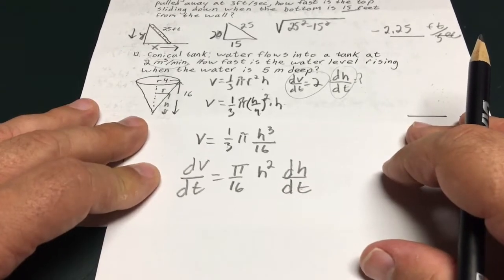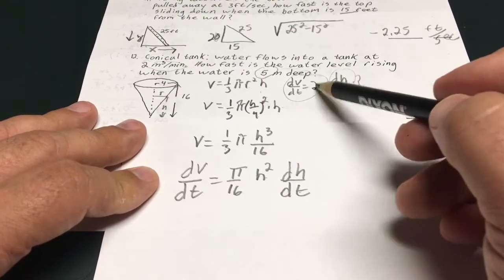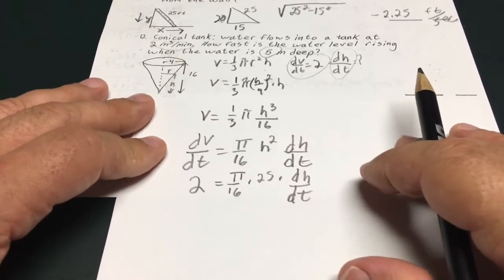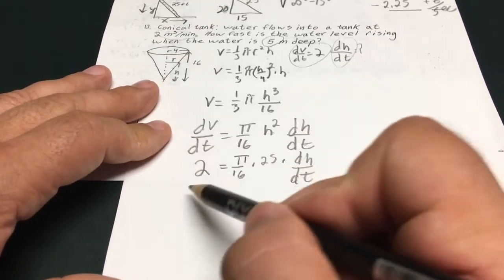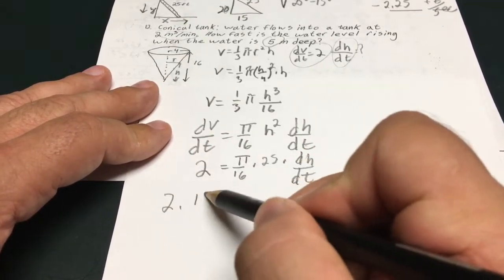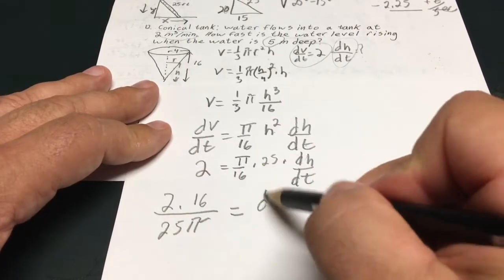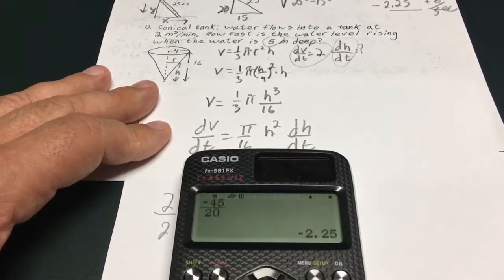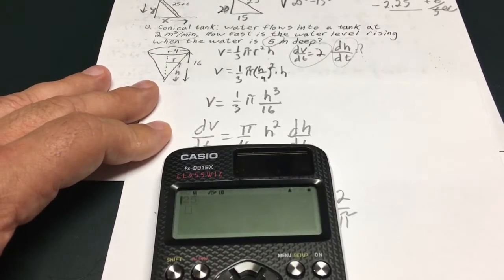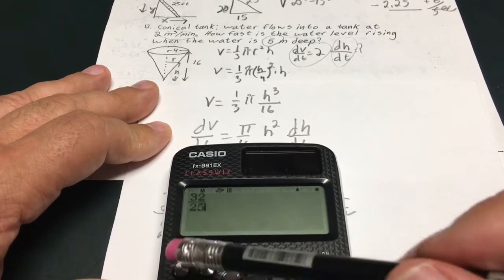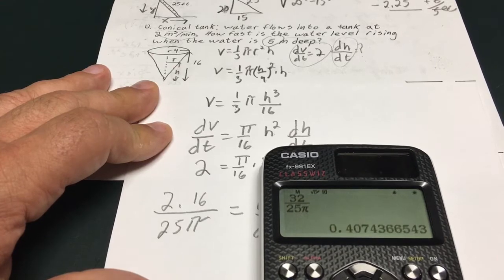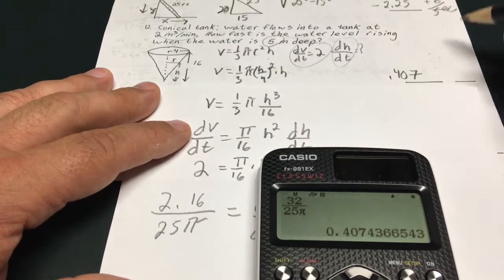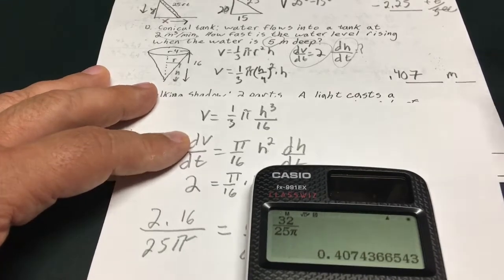And notice that's what I'm looking for. It asks me when it's 5 feet deep. So I know that h is 5. dv/dt equals 2. So this is going to give me 2 equals pi over 16 times 25 times dh/dt. And I'm just going to do the arithmetic. So I'm going to multiply this by 16 over 25 pi. So it's going to give me 2 times 16 over 25 pi equals dh/dt. So my final answer is going to be some weird number 32 over 25 pi. And I can calculate that on a calculator. This should give me a nice decimal, 0.407 meters per minute, just meters because it's the height change.